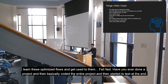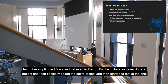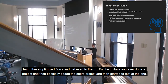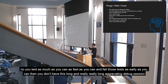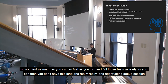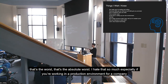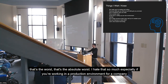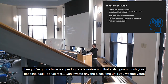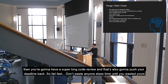Fail fast. Have you ever done a project where you coded the entire thing and then started testing it at the end? No — you should test as much as you can, as fast as you can, and fail those tests as early as you can. Then you don't have this long, really aggravating debug session. That's the absolute worst. Especially when you're working on a production environment for a company — then you're going to have a super long code review and that's also going to push your deadline back. So fail fast.